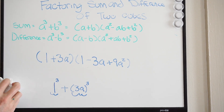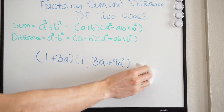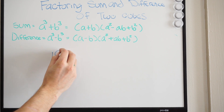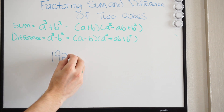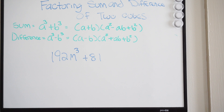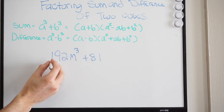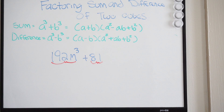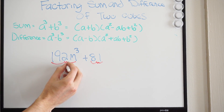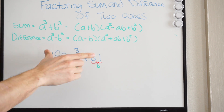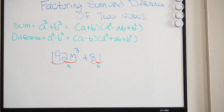Let's try one that's a little more challenging: 192m cubed plus 81. Same thing — let's identify our a and b terms. This whole thing right here is acting like my a, and this whole thing right here is acting like my b. So the first step: can we pull out a common term? Do they have anything in common that we can pull out? Looking at this, it looks like we can pull out a 3.